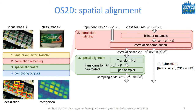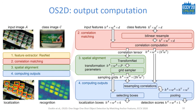The core of our model is the transformation network proposed by Rocco et al. This is a regular 2D ConvNet that treats correlations as 2D feature maps. When properly trained, this network can produce transformations aligning the class image to different locations of the input image. The computed transformation parameters are fed into a grid sampler, which provides locations for resampling the correlation tensor. At the final step, we pool the resampled correlations to compute the detection scores.